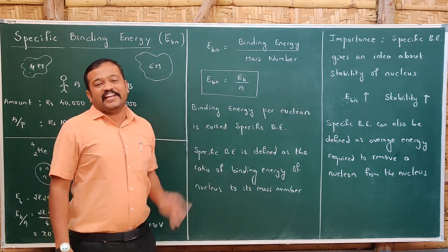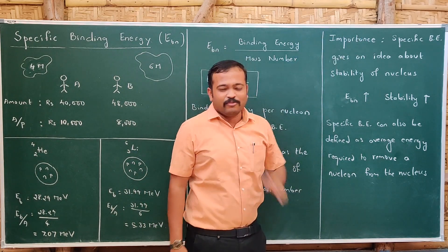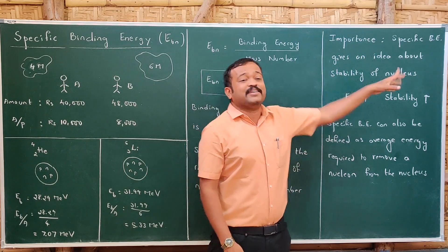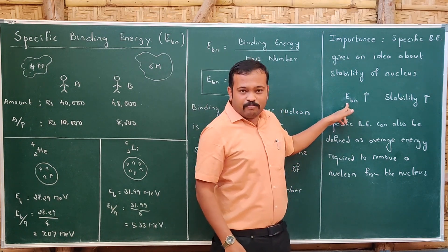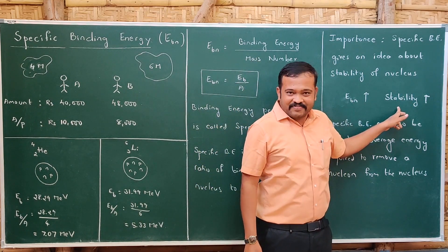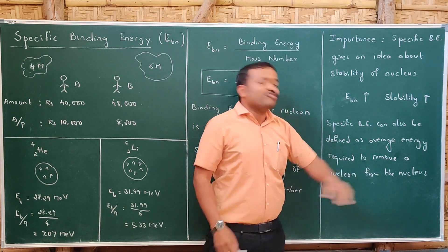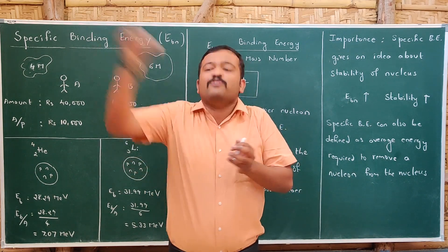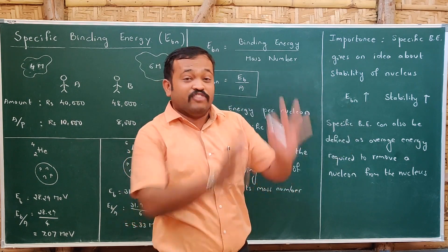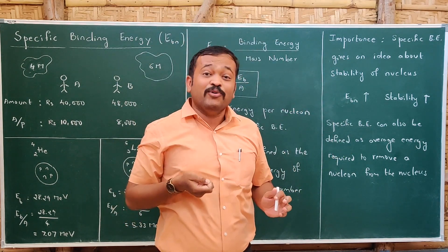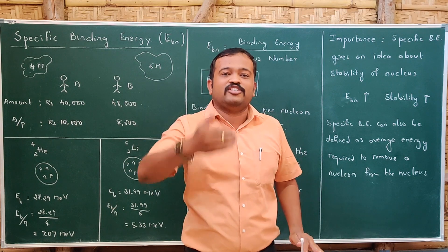What is the significance of specific binding energy? Specific binding energy gives an idea about the stability of the nucleus — which nucleus is more stable. Higher the specific binding energy, higher will be the stability. It can also be defined as the average energy required to remove a nucleon from the nucleus. If it is easy to remove a nucleon, the nucleus is not stable; if the nucleus is stable, it requires more energy to remove a nucleon.